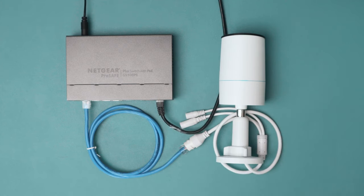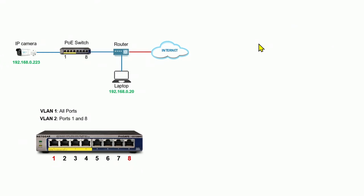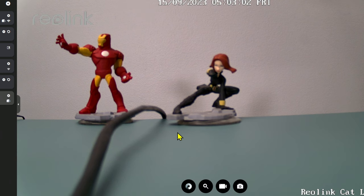Let's take a look at the diagram so you can understand better. Here I have the switch with eight ports. Port number one is connected to the IP camera — that's the IP of the camera. Port number eight is connected to my router. I also have my laptop connected to the same router, so the laptop can check and see the camera live. Here I have the software that shows the camera.